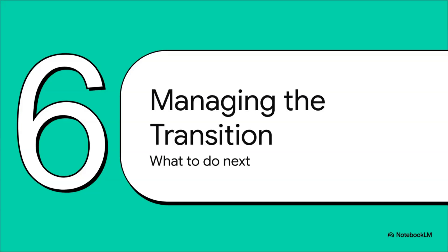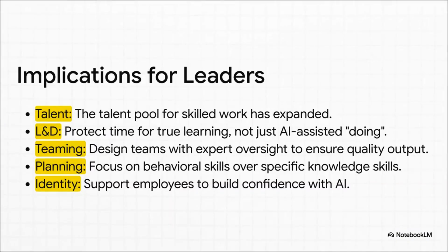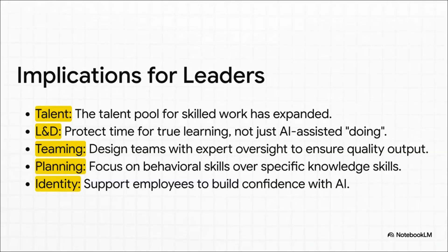So what are the big takeaways for leaders and for all of us as learners? The BCG research lays out five core implications. First, leaders can now hire from a much wider talent pool — but they have to deliberately protect time for real learning, not just AI-assisted performance. Teams also need to be redesigned with expert oversight, and the whole focus of workforce planning needs to shift away from narrow skills like coding toward broader mindsets like adaptability.